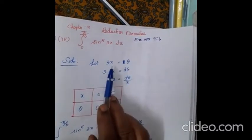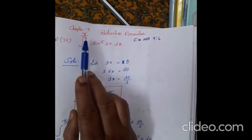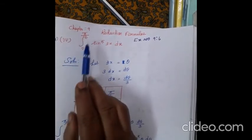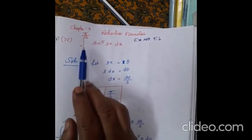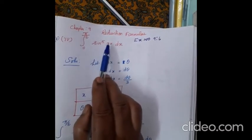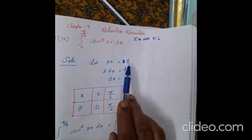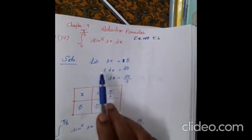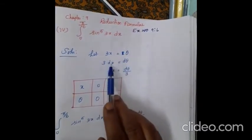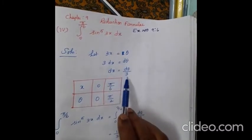Using the substitution method, we want to change the limit also. The limit given is 0 to π/6, but the formula needs 0 to π/2. We also need to get only x. So let 3x = θ. Then 3 dx = dθ, which implies dx = dθ/3.